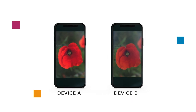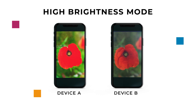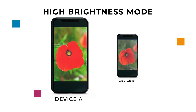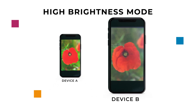Here we have two devices with high brightness mode activated under direct sunlight. On device A, the brightness and visibility appear to be high, but there is a significant loss of detail on the flower. Device B, on the other hand, has lower brightness levels but we can see so much more detail.